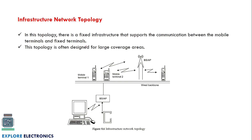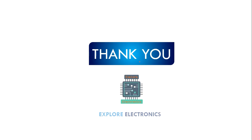The other type of topology is infrastructure network topology. In this topology, there is a fixed infrastructure that supports communication between mobile terminals and fixed terminals. This topology is often designed for a large coverage area. It has a wired backbone network and a base station. The mobile stations connect with the base station, and any fixed terminal can also communicate with the base station or access point. This is called infrastructure network topology.